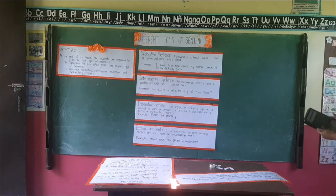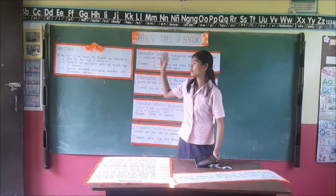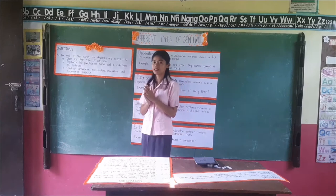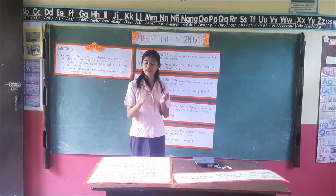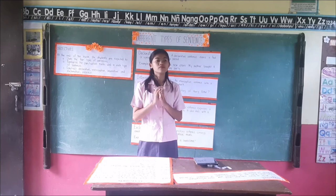I can see that you really understand these four types of sentences. Without looking at the board, we have four types of sentences: declarative, interrogative, imperative, and exclamatory. Who can tell me the differences of the four, without looking at the board? Very good.